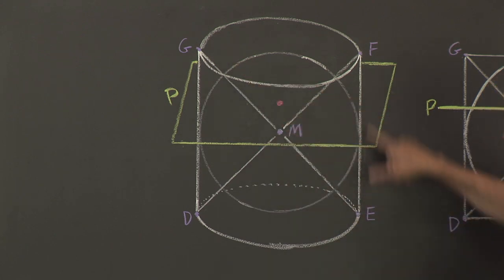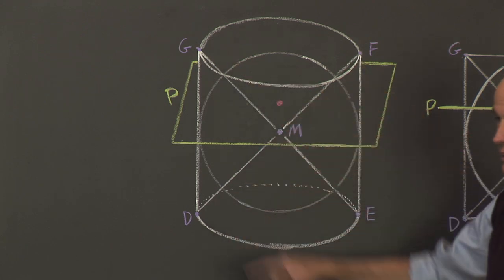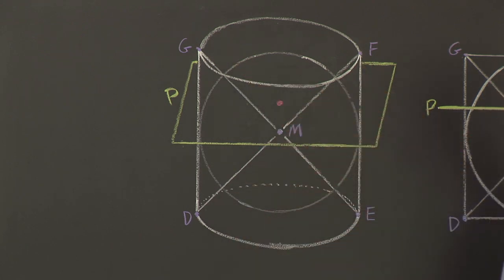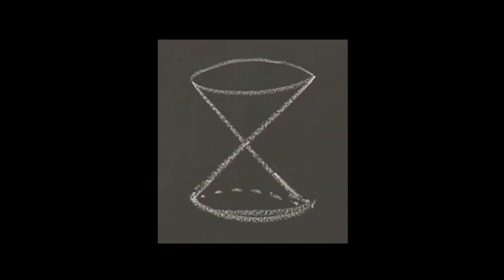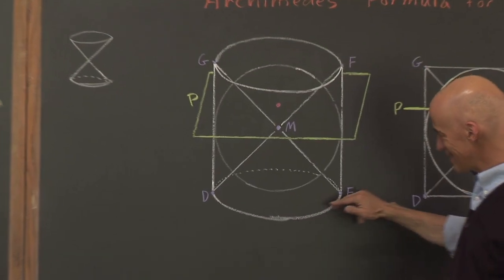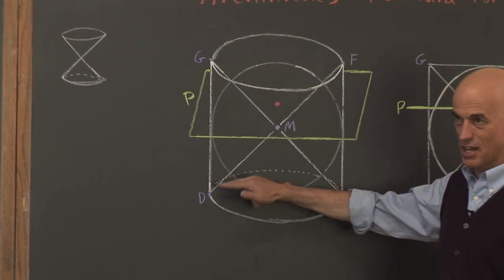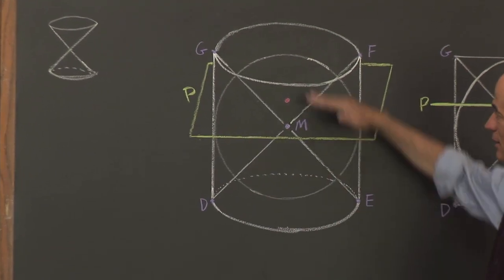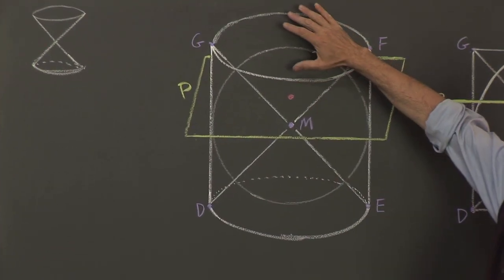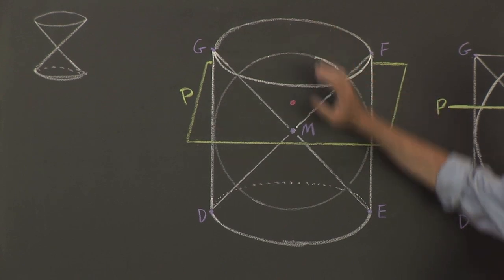So this big X — what you're really seeing is a double cone. I could draw a smaller picture of what a double cone looks like. The floor of the cone is exactly the same as the floor of the cylinder, and the top of this double cone is the same as well.